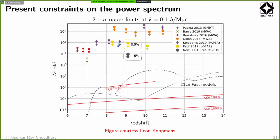Various experiments are trying to detect this signal. The field was led by GMRT — the first paper came out from GMRT in 2013. After that, MWA in Australia and LOFAR in the Netherlands have taken over and are much ahead. The current limits are still well above the theoretical signal, so one has to observe much longer to get rid of the noise and reach the detection level. This is a prime target of a number of radio telescopes.